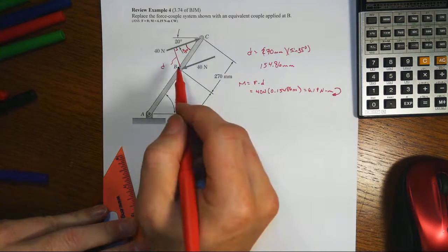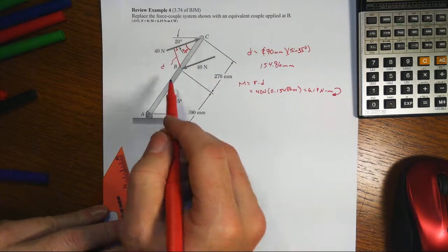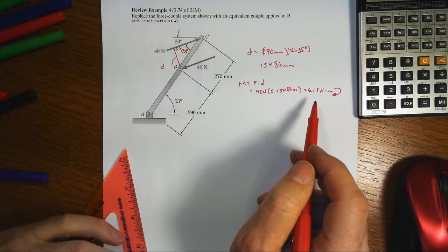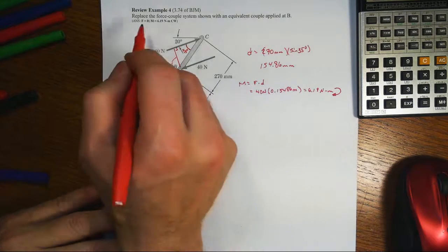And it wouldn't really matter whether it was point B or point C or point A. This force couple would have this equivalent effect on the body no matter where we actually wanted to find this moment.